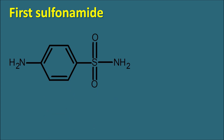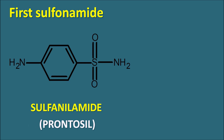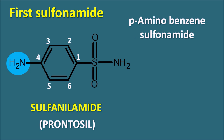The first sulfonamide is sulfonamide itself — para-aminobenzenesulfonamide. It is structurally similar to para-aminobenzoic acid, where the carboxylic acid is replaced with a sulfonamide group. This sulfonamide moiety is present in prontosil. Numbering the ring from the sulfonamide group, an amino group is found at the fourth position, giving para-aminobenzenesulfonamide.